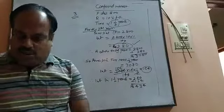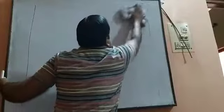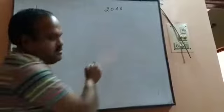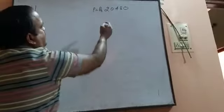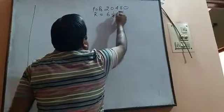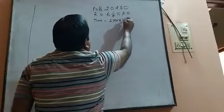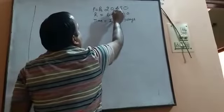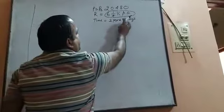Now another question — question number 5. In this question we have 20,480 rupees as the principal. The rate is 6.25% per annum, and the time is 2 years 73 days. Since the rate of interest is in percentage per annum, we need to change this 73 days to years.